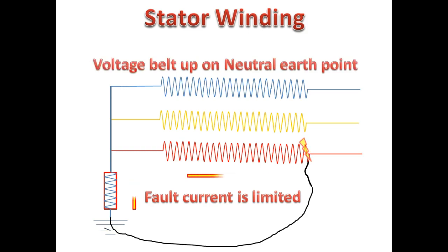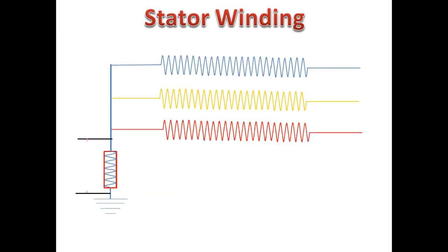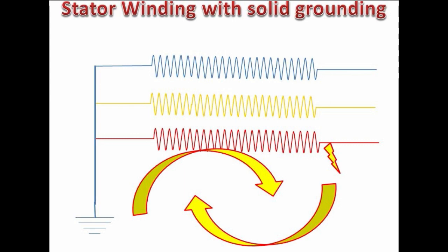If the winding has an earth fault, the current is limited due to high resistor or high impedance from this current limiter. There will be a potential difference created across the earth point to neutral.